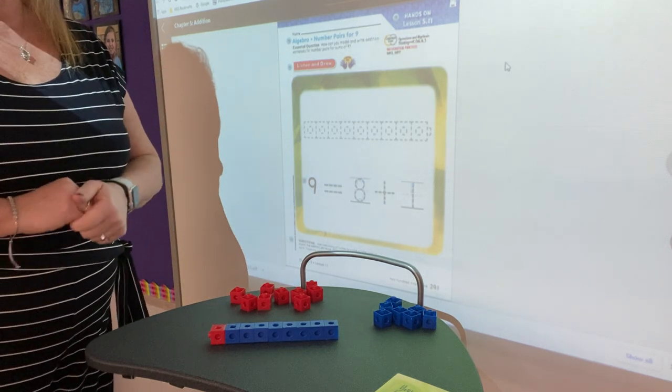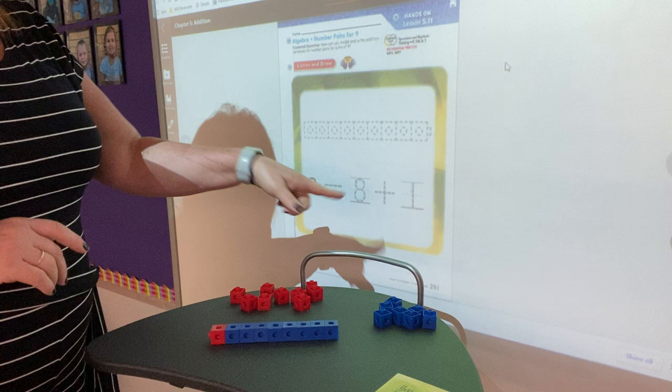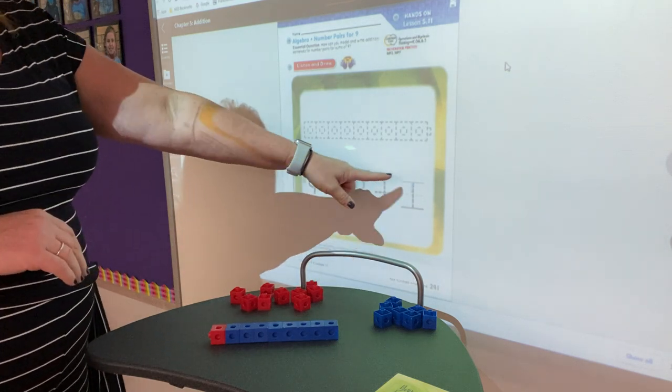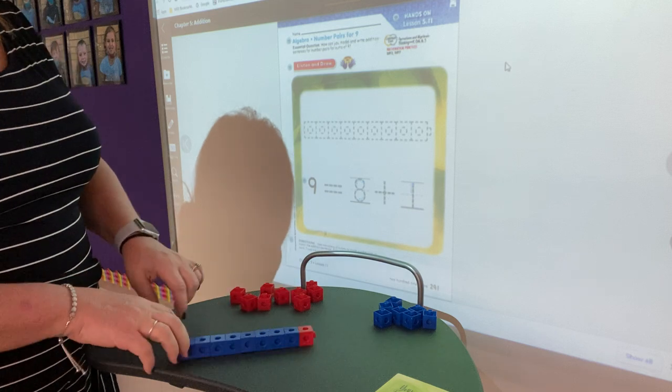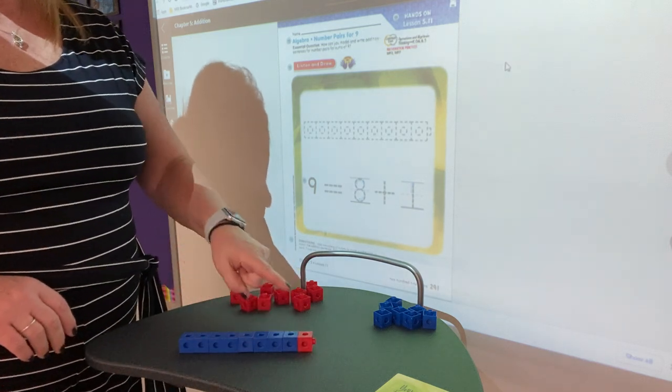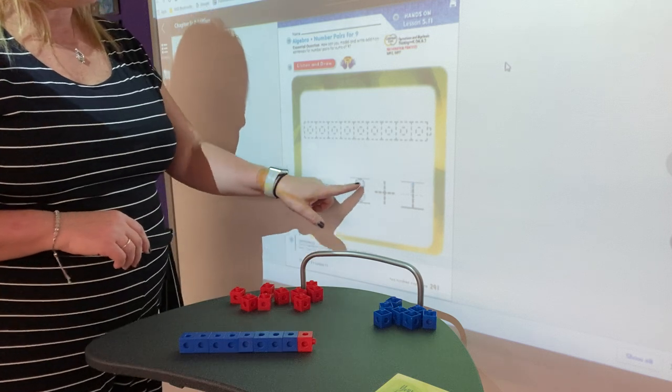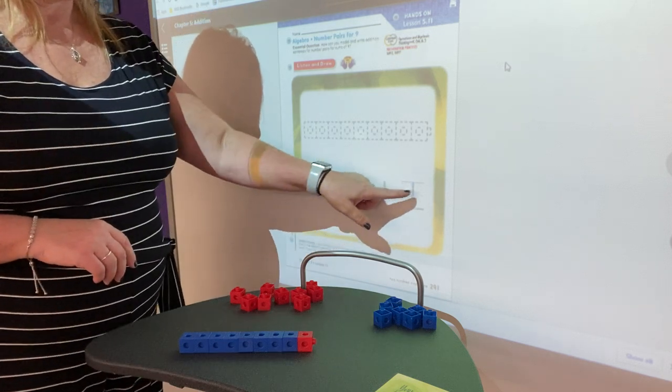We're going to find number pairs that equal 9 today. We're going to start with the very first equation or the number sentence that they have here. 9 is equal to 8 plus 1. That's like saying there are 8 blue cubes and 1 red cube. So go ahead and trace that. 9 is equal to 8 plus 1.